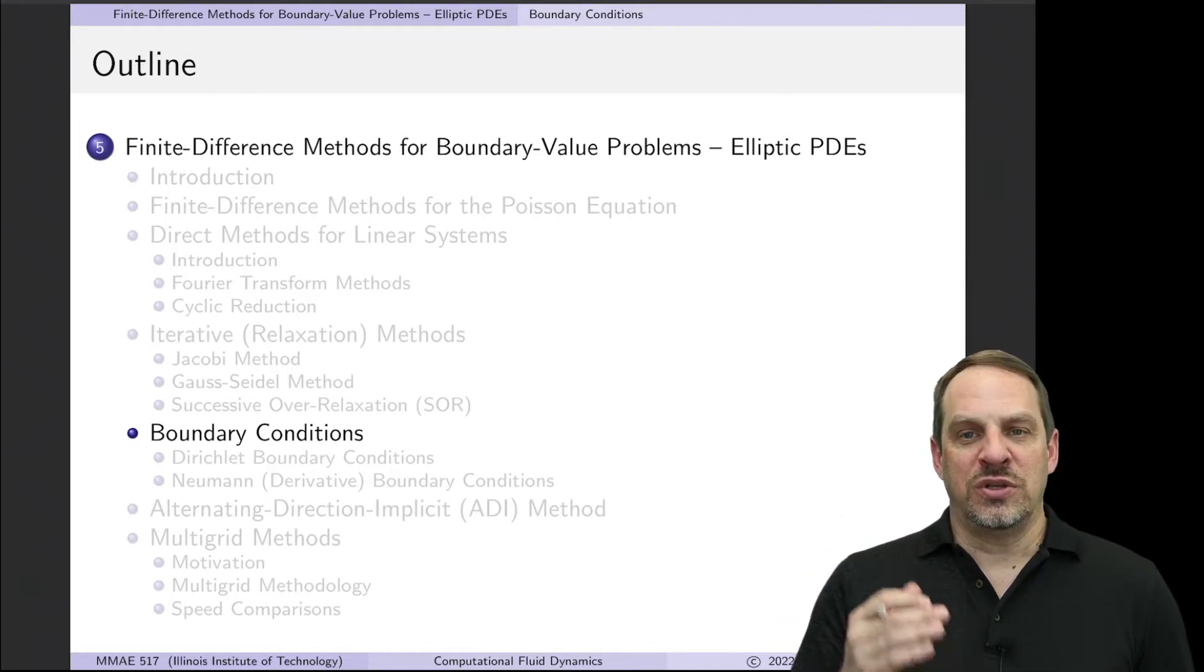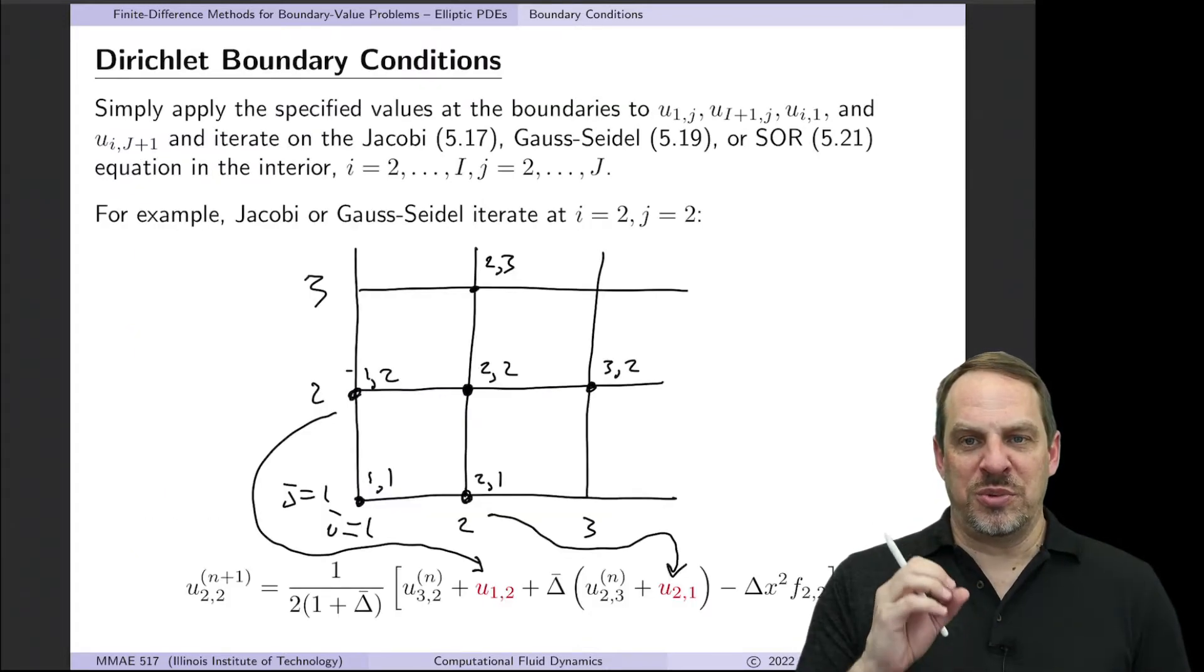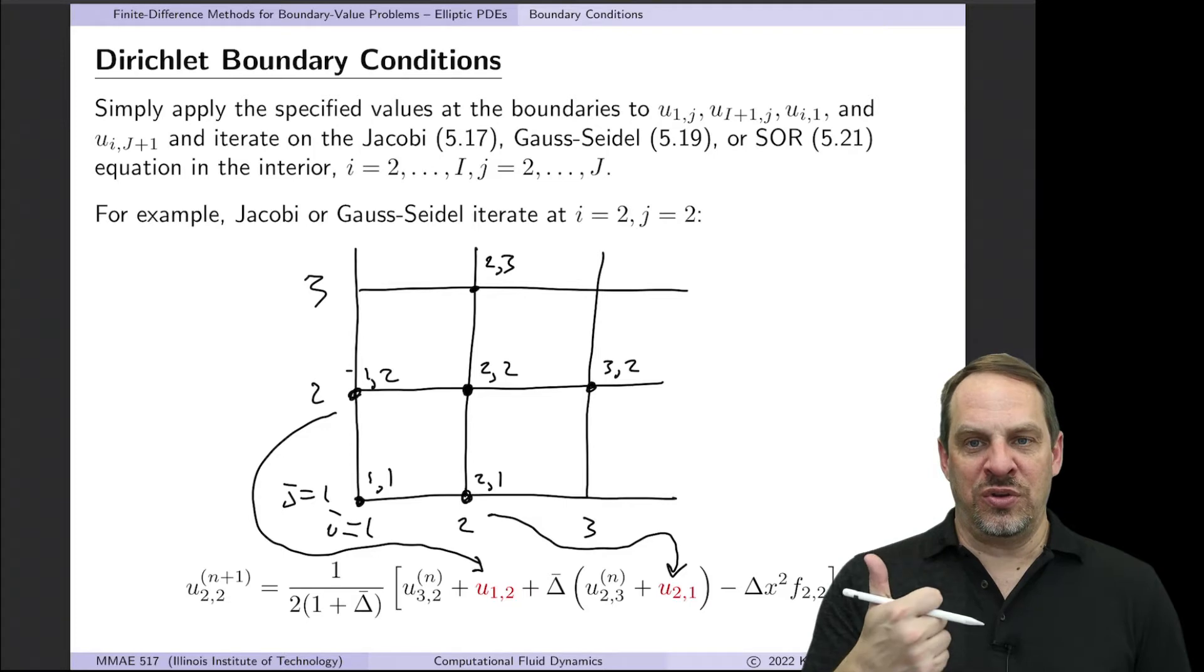Here we're going to do exactly the same thing. It's going to be in two dimensions with natural extension to three dimensions as well. So let's look at Dirichlet boundary conditions first. Remember, Dirichlet boundary conditions mean that we know the value of U at each point on the boundary.